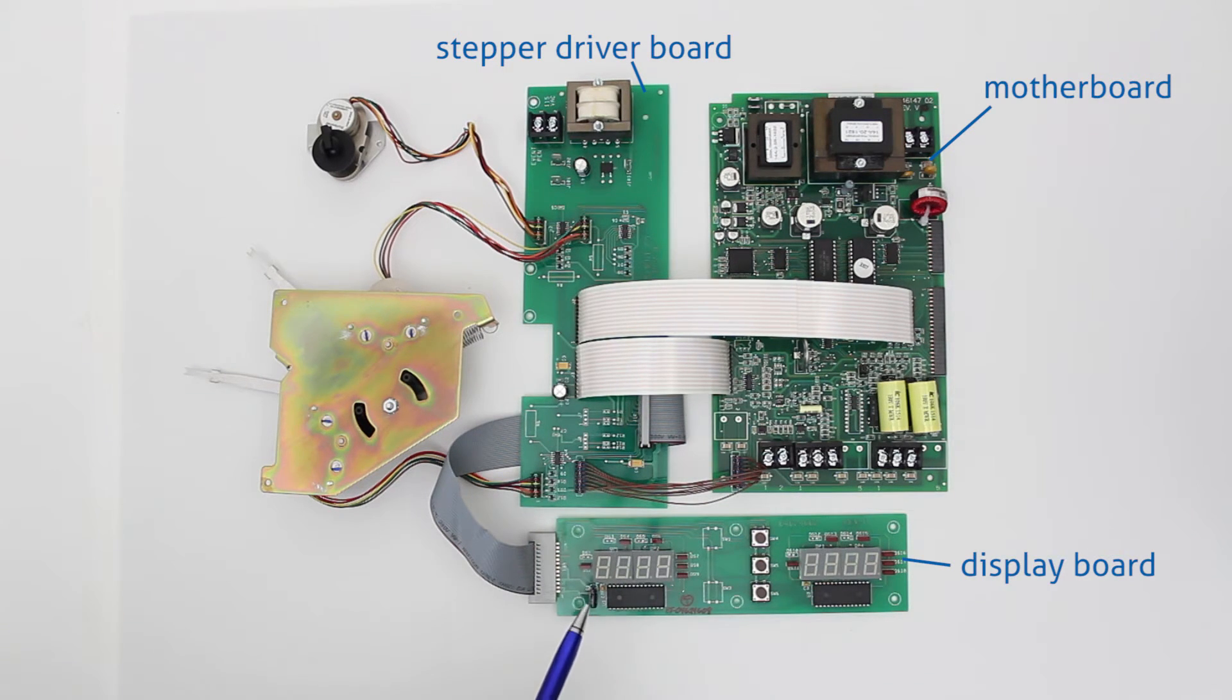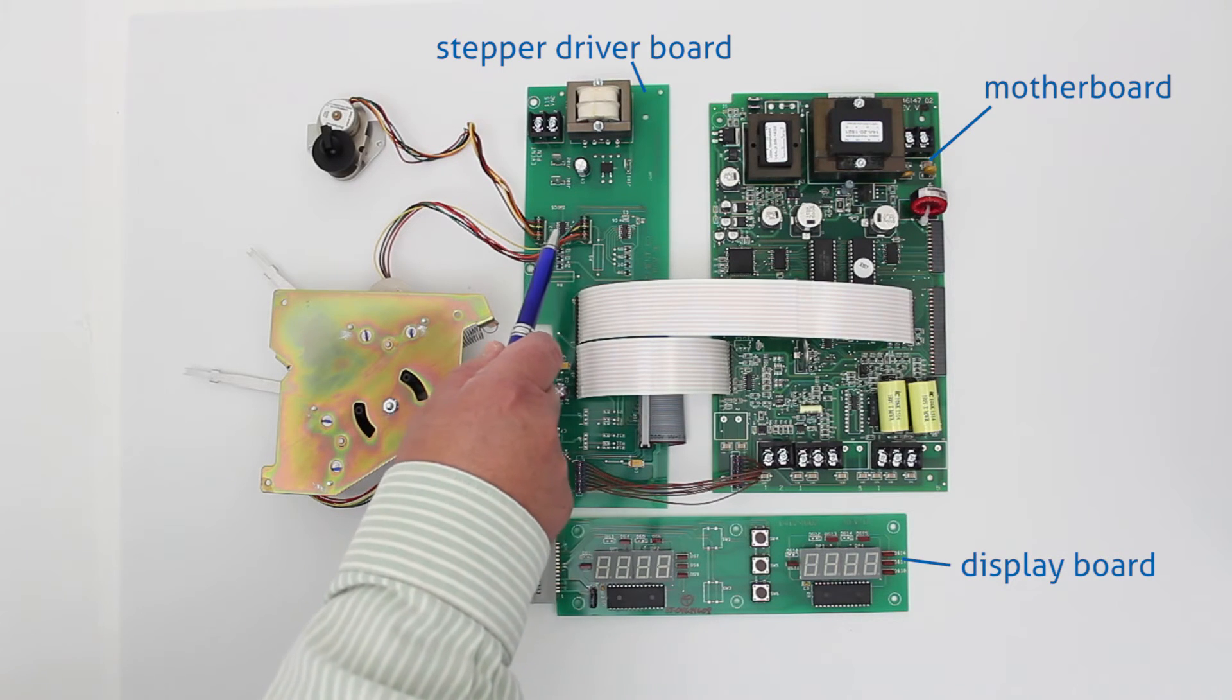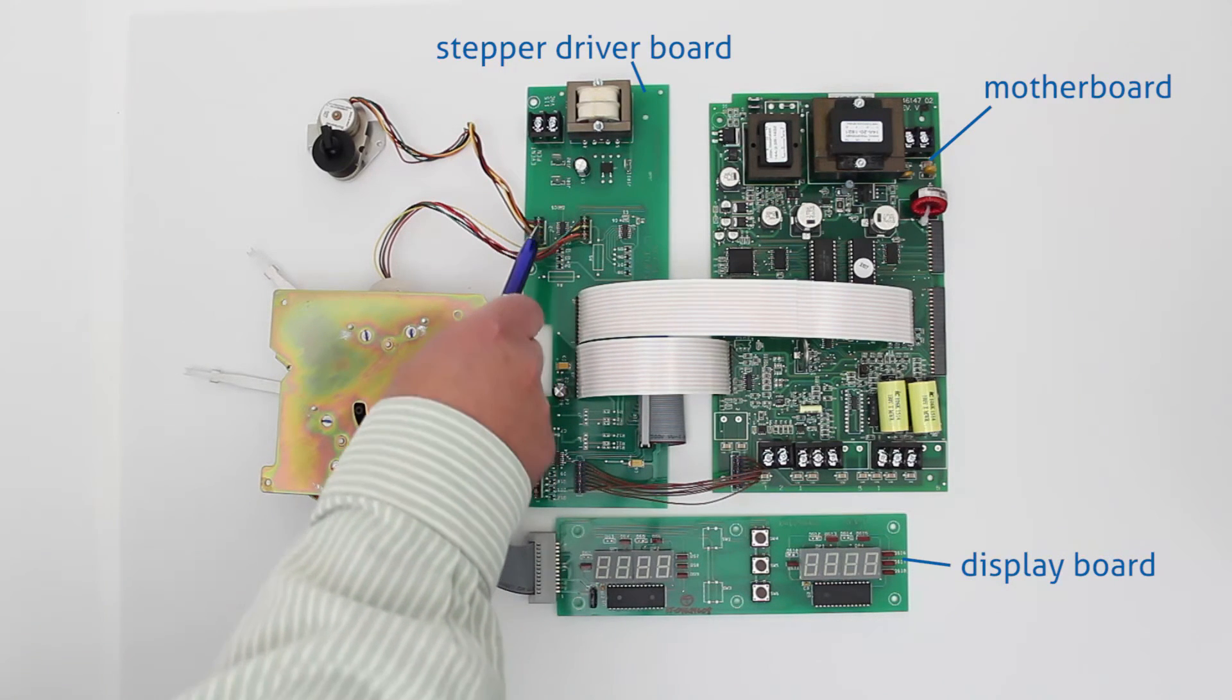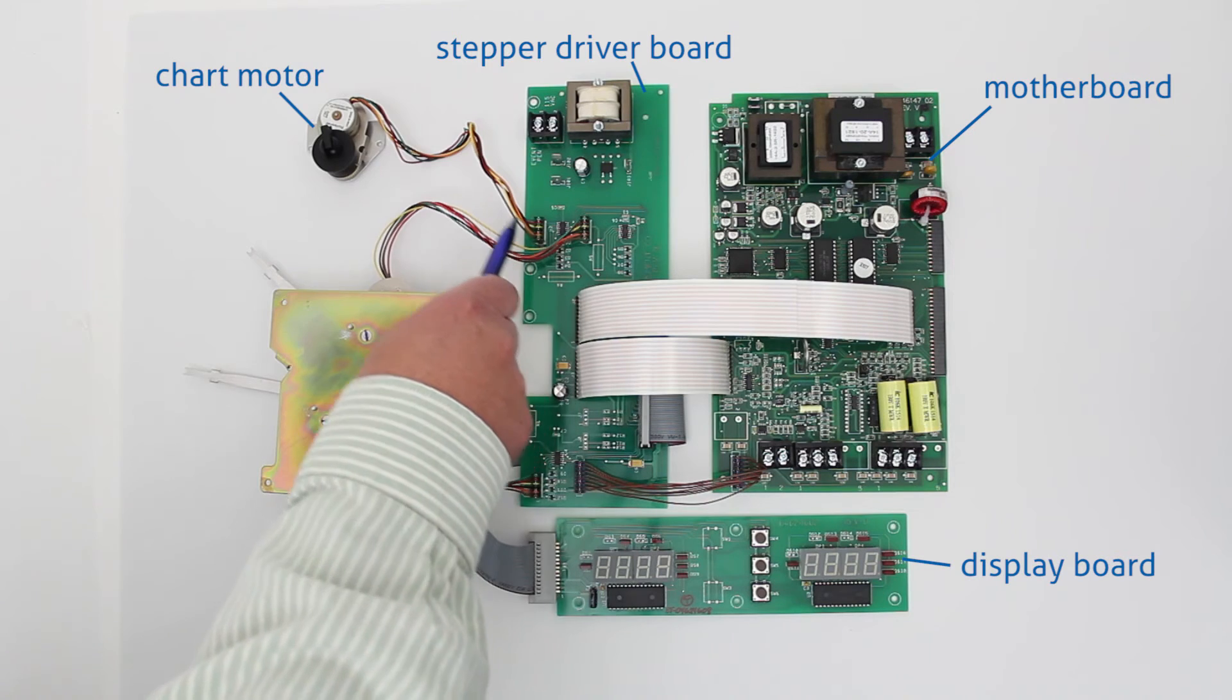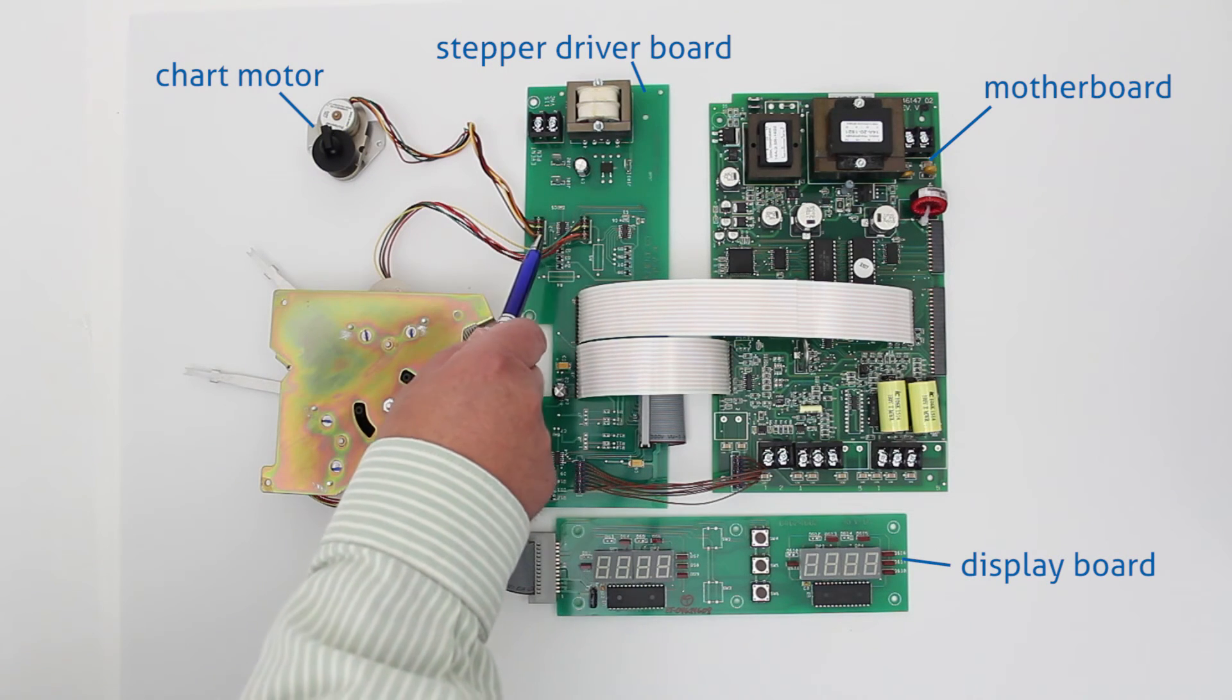Then we can see where our motors connect up on the top of the stepper driver board. We have our chart motor plugs in right here, goes over to the chart drive, and our pen one motor plugs in directly behind where the chart motor plugs in.